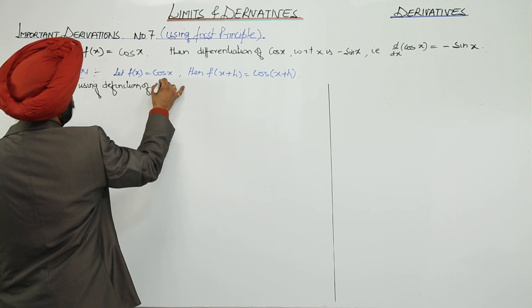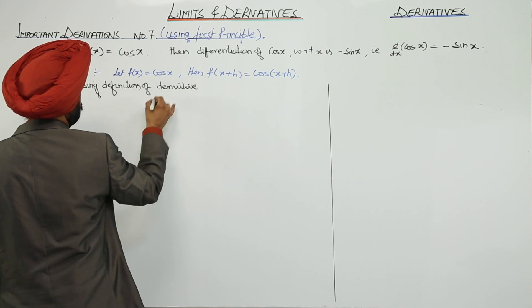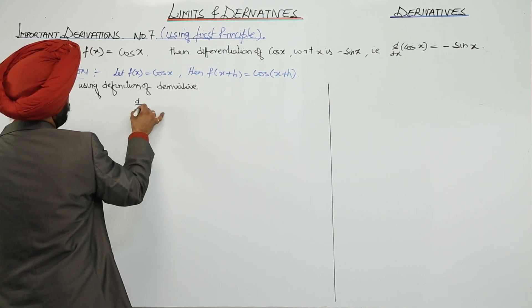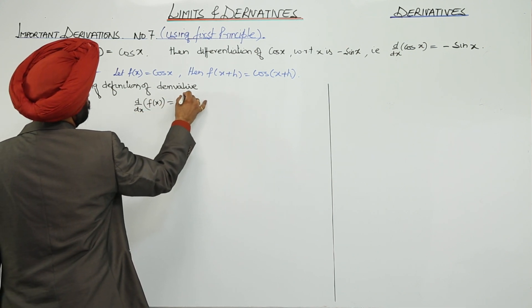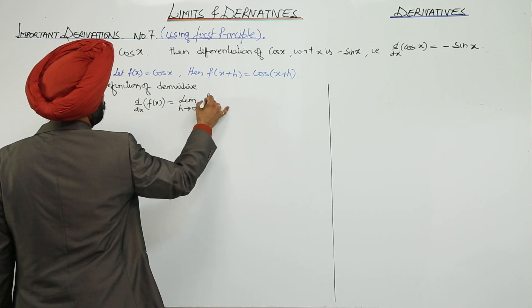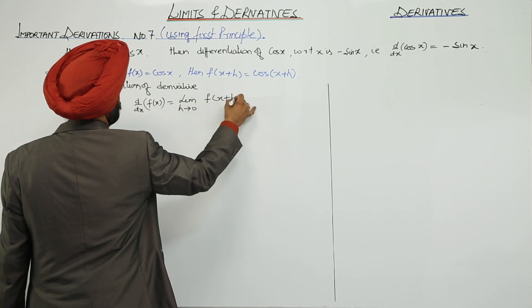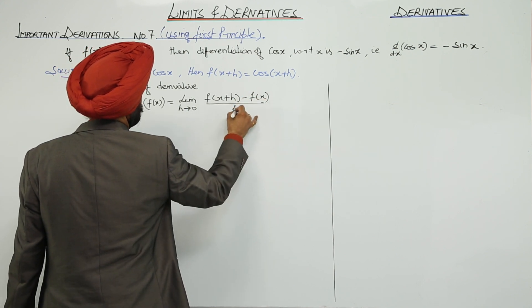Definition of derivative: d by dx of f(x) is equal to limit h approaches to 0, f(x + h) minus f(x) upon h.